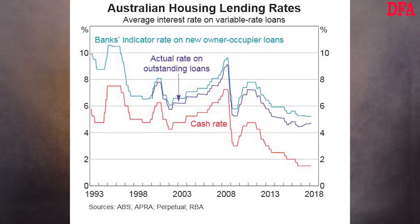To round out our quick tour we look at housing lending rates. Whilst there has been no recent changes to the cash rate for the past 20 months or so, and bank headline indicator rates for new owner-occupied loans have come down reflecting strong competition for low risk new business, the real rates paid by borrowers continue to rise. And even small rises will put more into mortgage stress. 965,000 households are in this condition based on the latest research, which equates to about 30% of the market. You can watch our separate video on this important topic.